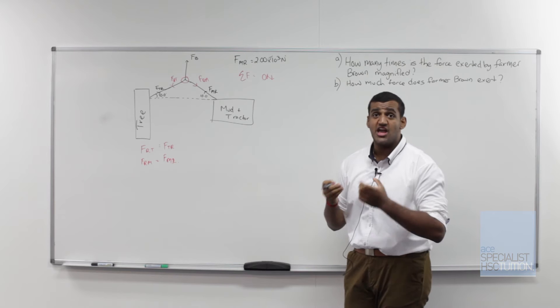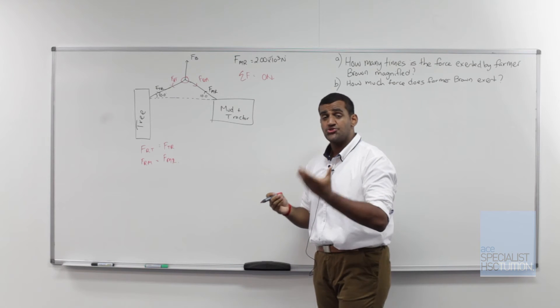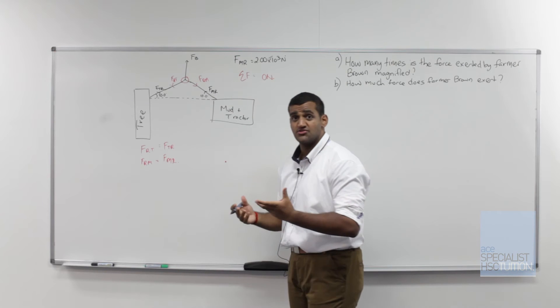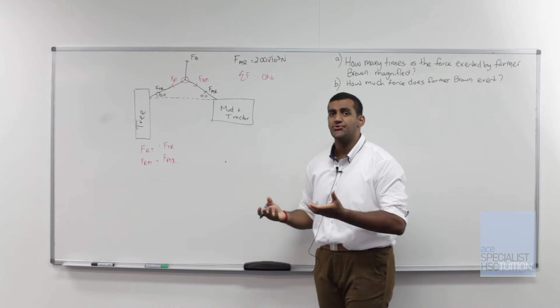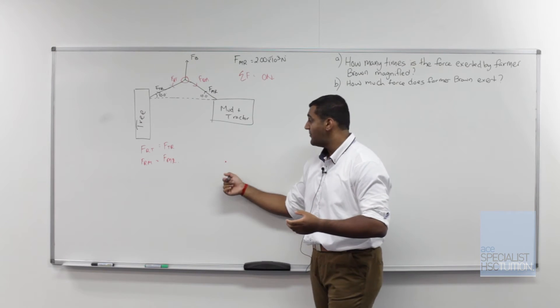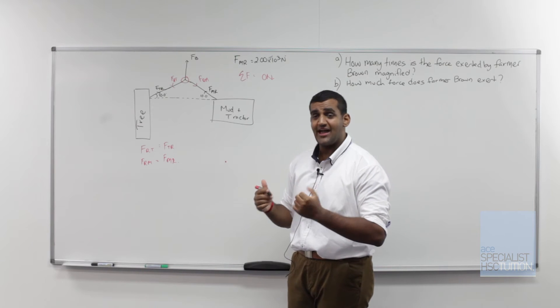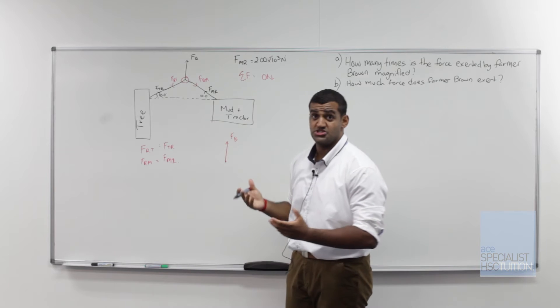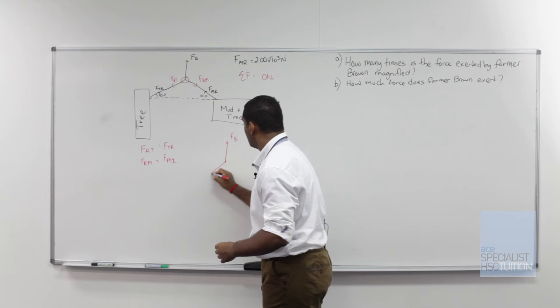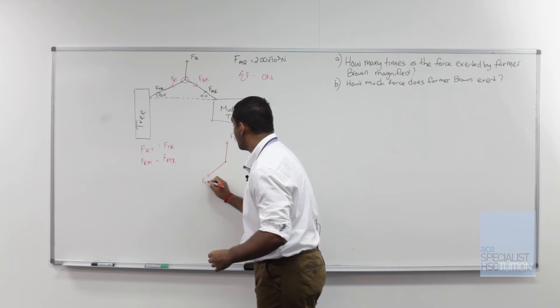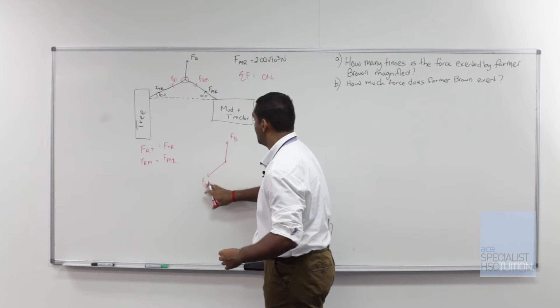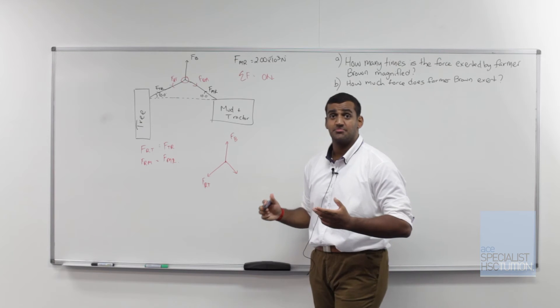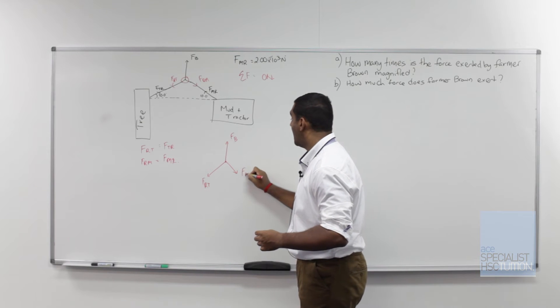Now we're at the stage where we can draw up that free body diagram. When drawing a free body diagram, just draw your body as a simple dot in the center of the page and then draw all the forces that are acting on this body. So if our body is a rope, the forces that are acting on this rope are the force of Farmer Brown pulling which is FB, the force of the tree pulling which is FRT, and the force of the tractor pulling which is FRM.